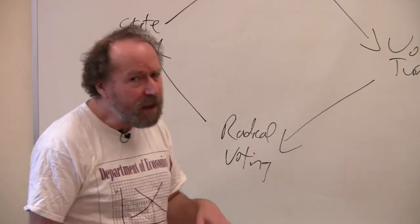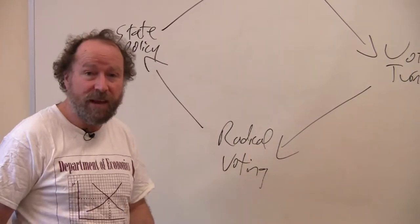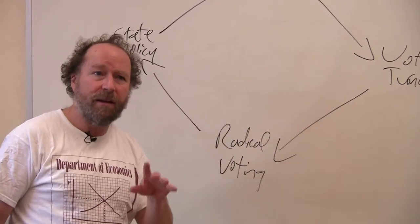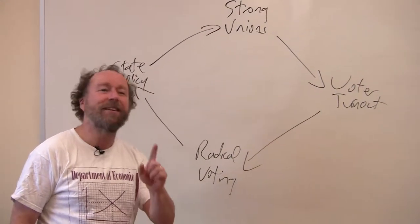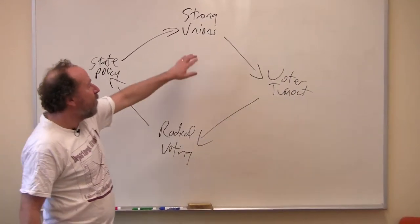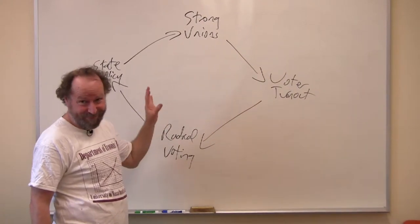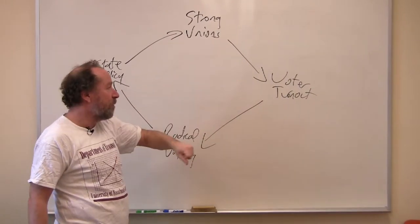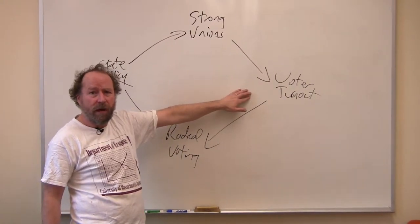And to some extent we have a simple model which comes out of the work I did in the article on third party activity in Massachusetts, which is on the reading list, required reading, so do it. You start with strong unions. And this is the virtuous cycle. You start with strong unions.